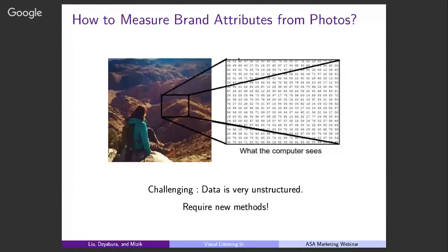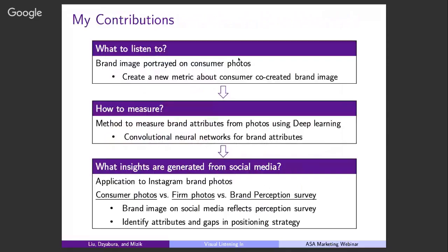To give an overview of what we do in this research and our contributions: we asked and answered three questions. First, given so many consumer photos on social media, what can we learn from them? We propose that we can measure brand image — brand intangibles — portrayed on consumer photos, creating a new metric about consumer co-created brand image. Second, how to measure it? We provide a method to measure brand attributes from photos using deep learning, a very new and emergent field in machine learning. Specifically, we tuned a convolutional neural network for brand attributes.